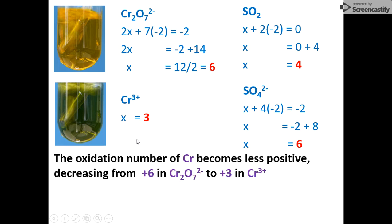So what does this mean? The oxidation number of chromium changed from plus six in dichromate to plus three in the chromium(III) ion — it's become less positive. Notice that the oxidation number is always a property of an element. Don't just say 'the oxidation number becomes less positive' — that's not specific enough. You must identify the element, chromium, and the number in each species: plus six in dichromate and plus three in the chromium(III) ion.